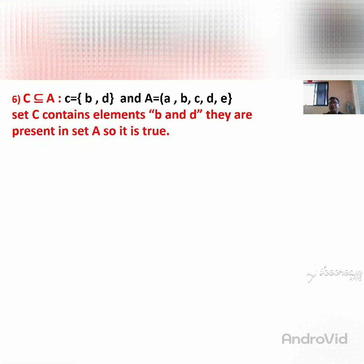Question number 6: C is a subset of A. C has elements B and D. A has elements A, B, C, D, E. We check: C has B — A has B. C has D — A has D. All elements of C are present in A. So C is a subset of A is true.